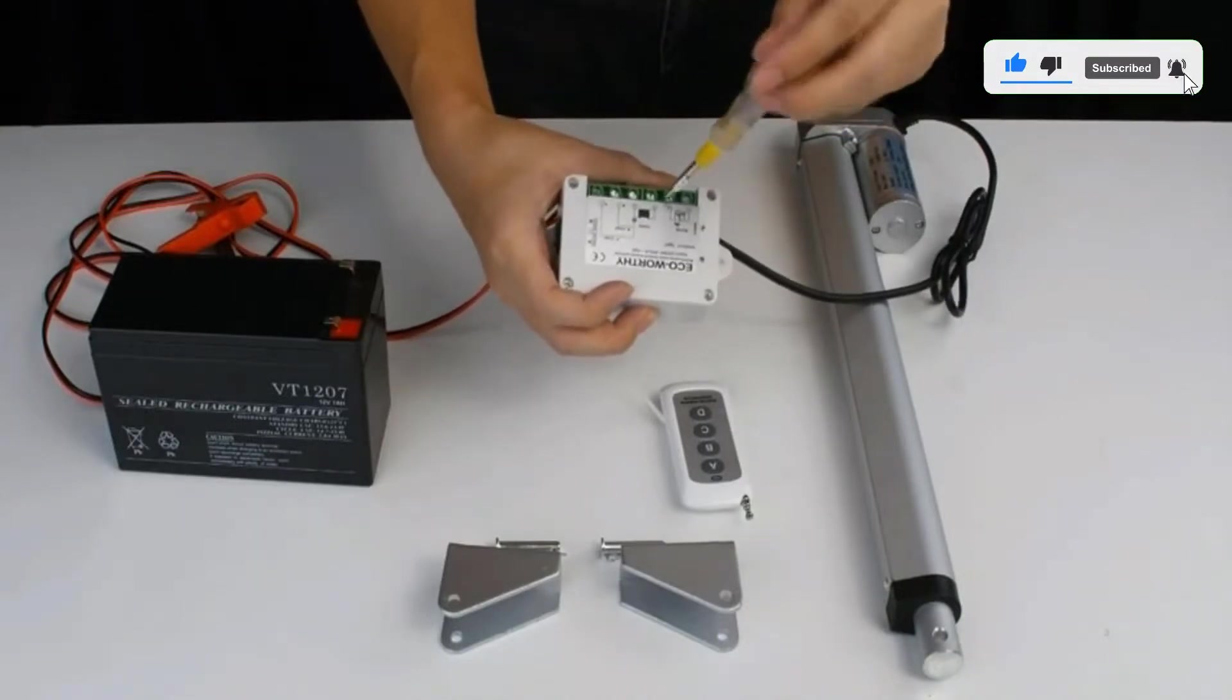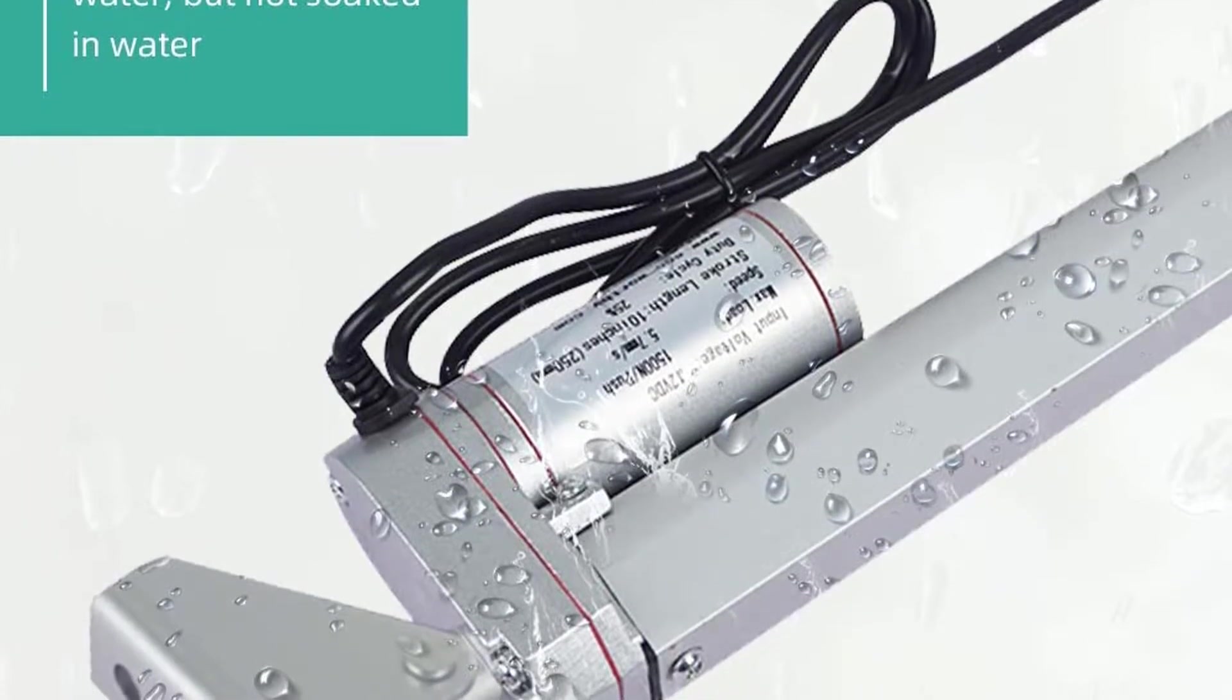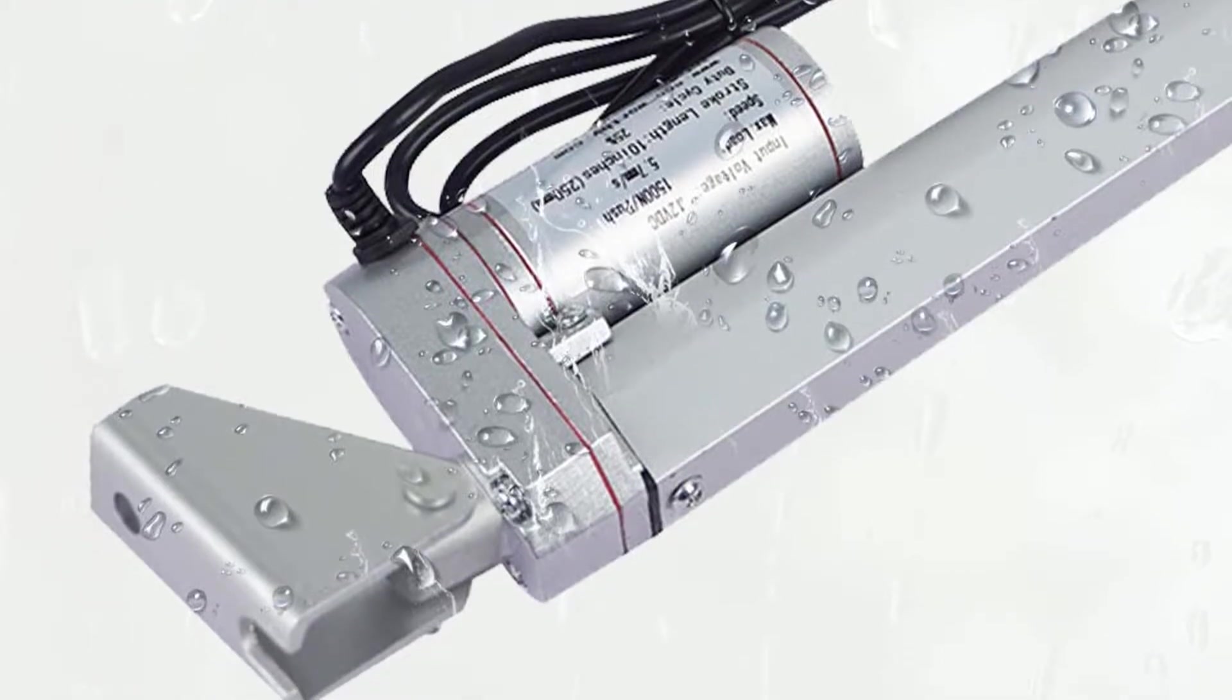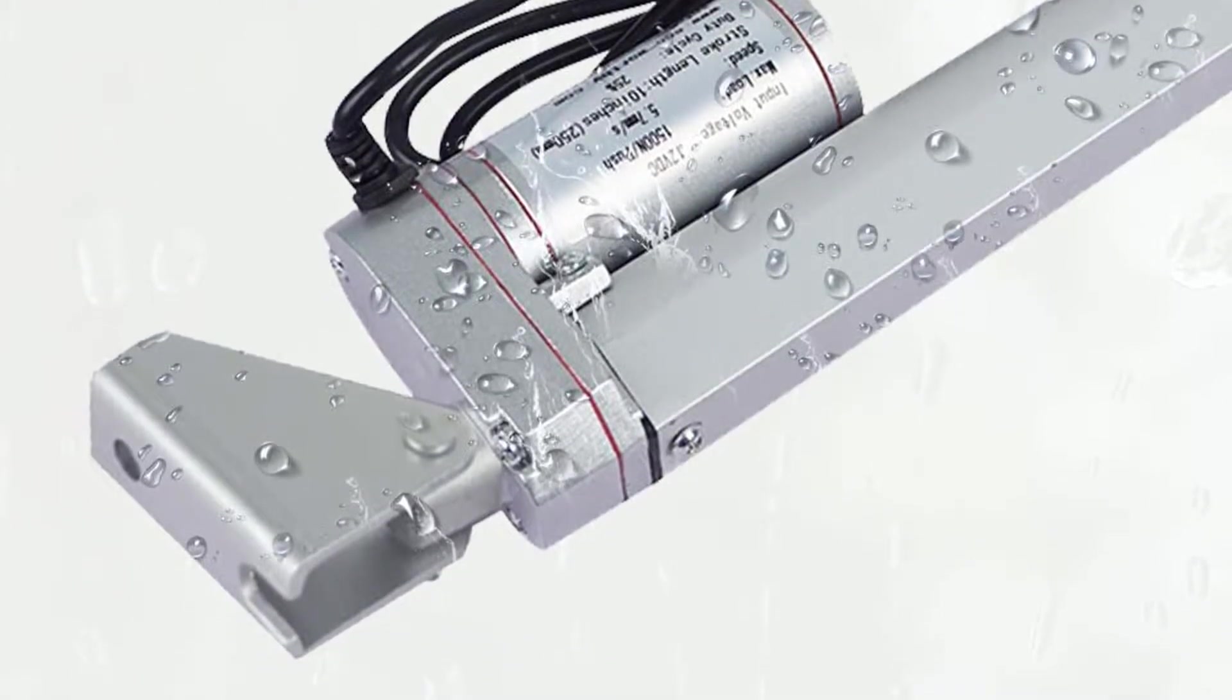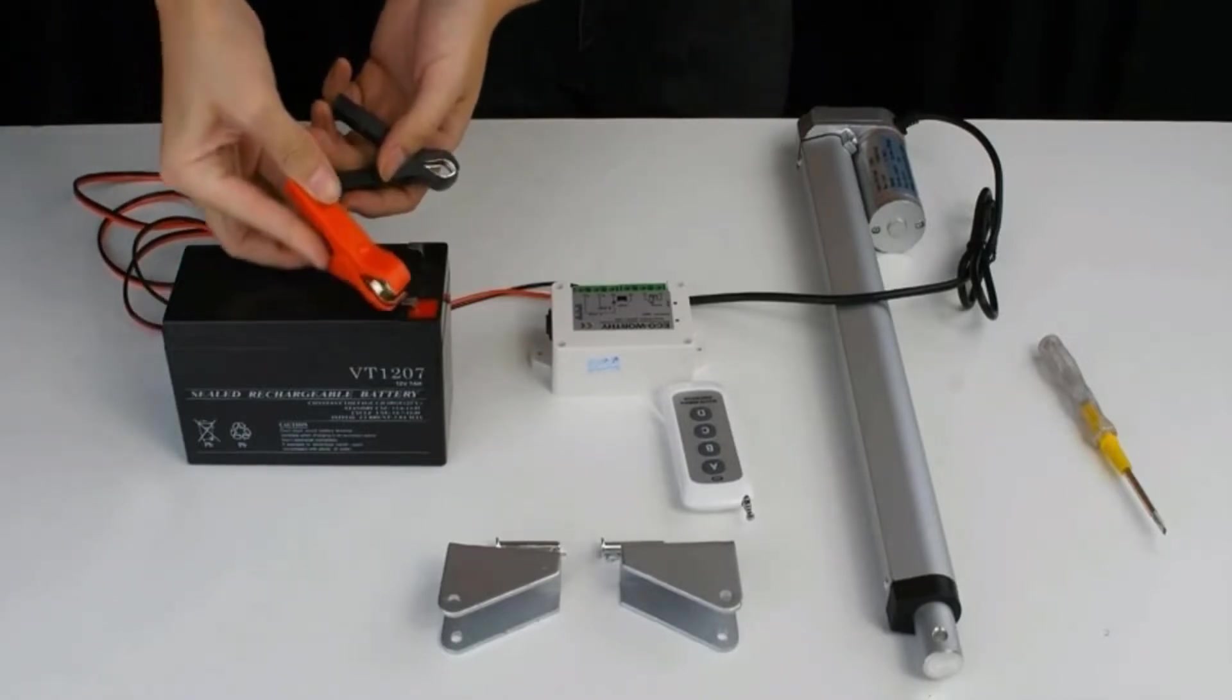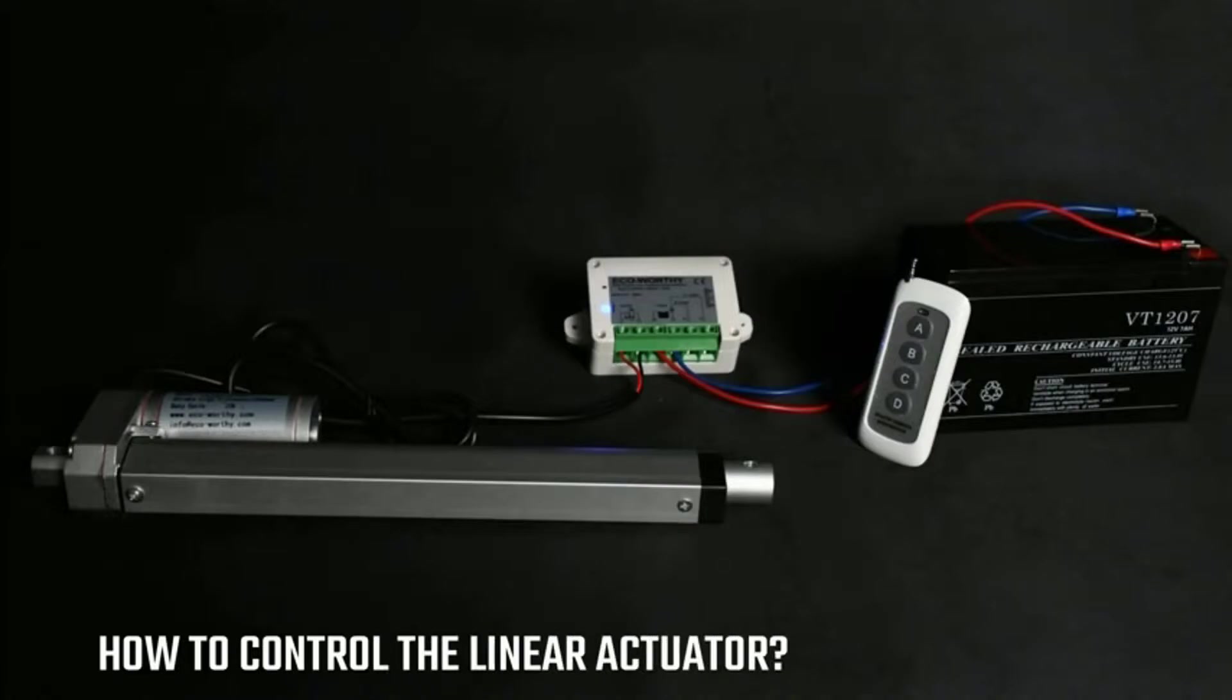Starting with its maximum load capacity, this linear actuator is designed to handle up to 330 pounds of weight with ease. However, the higher load capacity does result in a lower travel speed of 5.7 millimeters per second. This travel speed can be an issue when you consider the given stroke length rating of 450 millimeters.